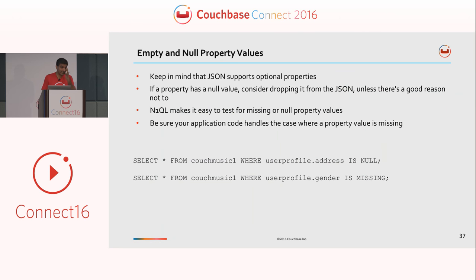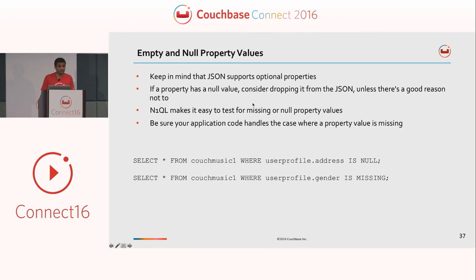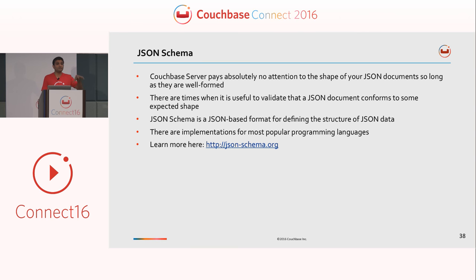How do you deal with empty versus null versus missing attributes? Empty attributes are ones which are not valued, while missing are attributes that are not available at all — for example, an author document where children are not present, so children are missing. The reason to use missing is because JSON supports optional properties, so it's a good thing to have missing. For JSON schema: Couchbase does not validate any schema. But if you want your documents to adhere to some kind of schema, you have jsonschema.org, and your JSON document can be validated against that schema.